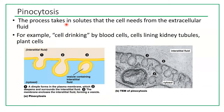Pinocytosis is the process of taking in solutes that the cell needs from the extracellular fluid — cell drinking — performed by blood cells, cells lining kidney tubules, and plant cells. Vesicles are formed with interstitial fluid and some dissolved material. A dimple forms in the plasma membrane, which deepens and surrounds the interstitial fluid. The membrane then encloses this fluid forming a vesicle, and whatever dissolved particles were outside are now inside the cell.